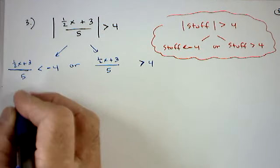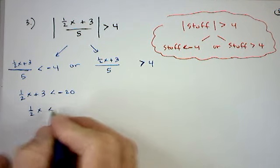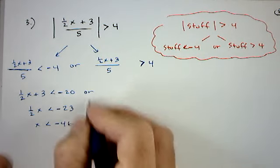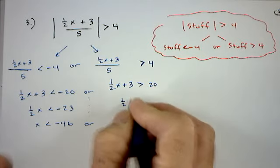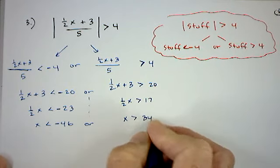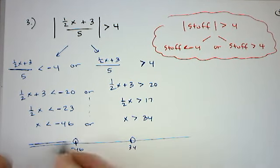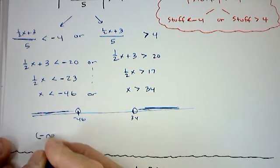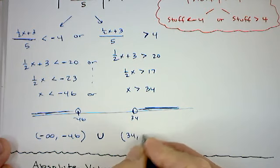Solving the left inequality: multiply by 5 → (1/2)x + 3 < −20; subtract 3 → (1/2)x < −23; multiply by 2 → x < −46. Solving the right inequality: multiply by 5 → (1/2)x + 3 > 20; subtract 3 → (1/2)x > 17; multiply by 2 → x > 34. On the number line, the solution is everything to the left of −46 or to the right of 34. In interval notation: (−∞, −46) ∪ (34, +∞).